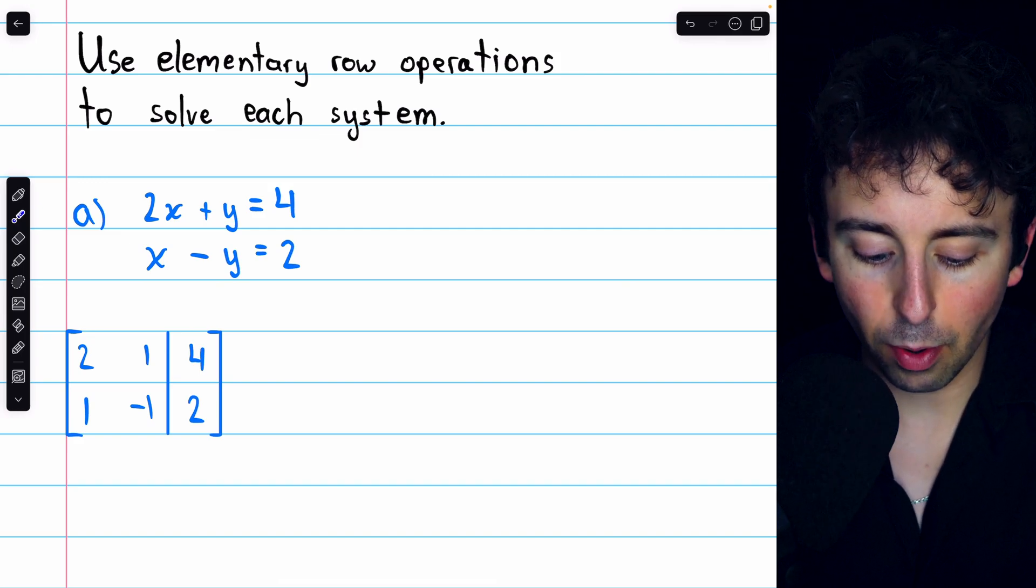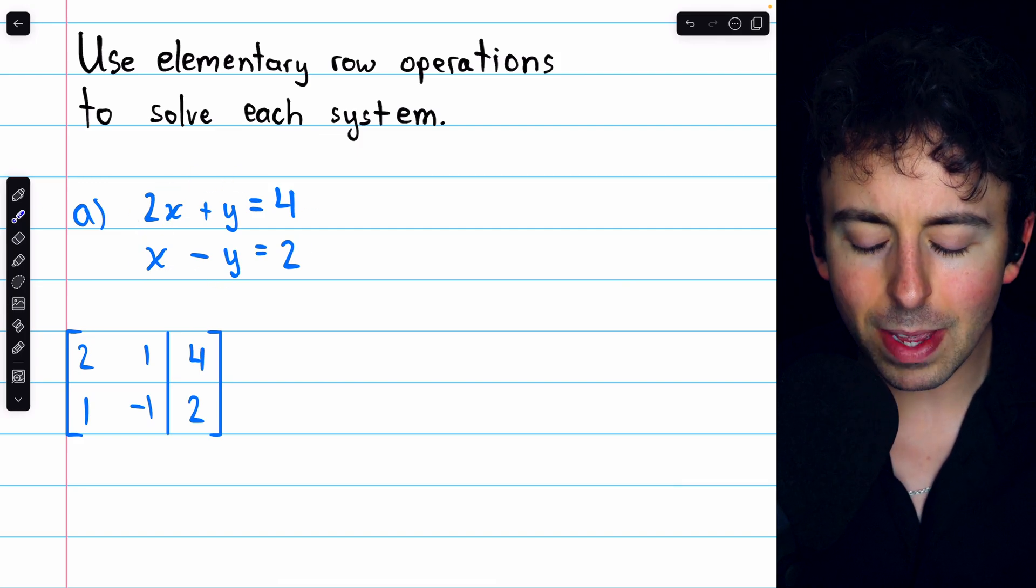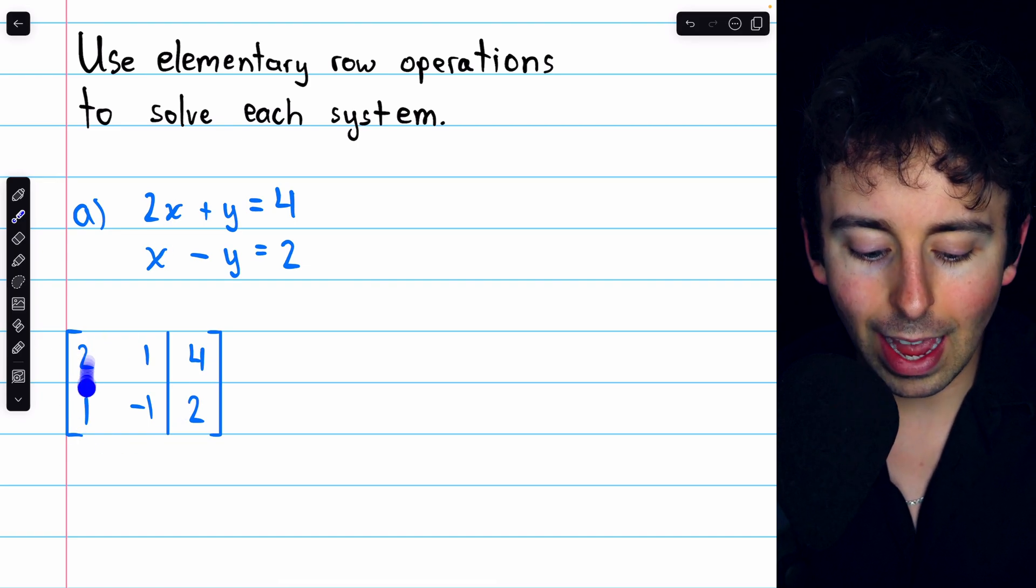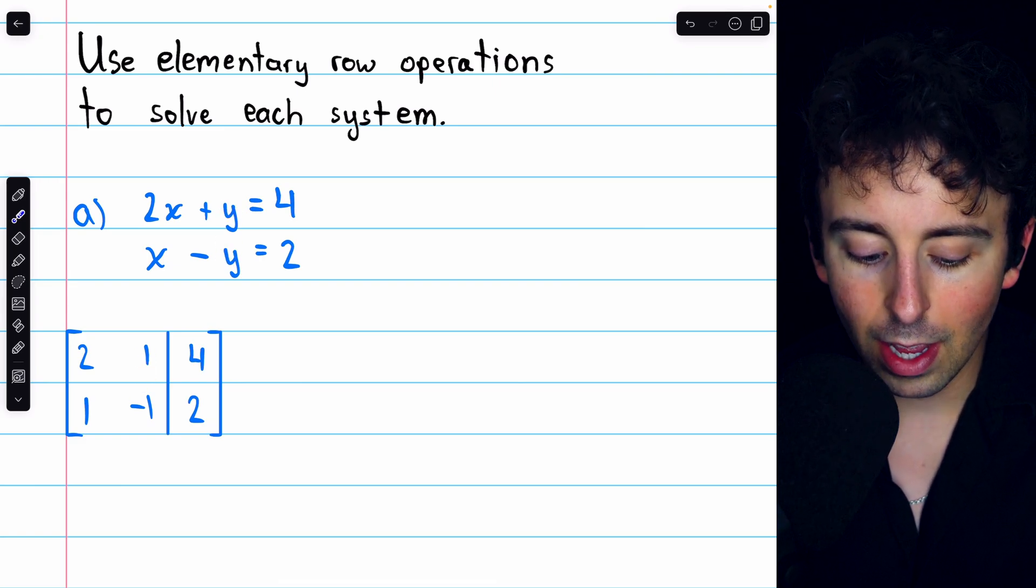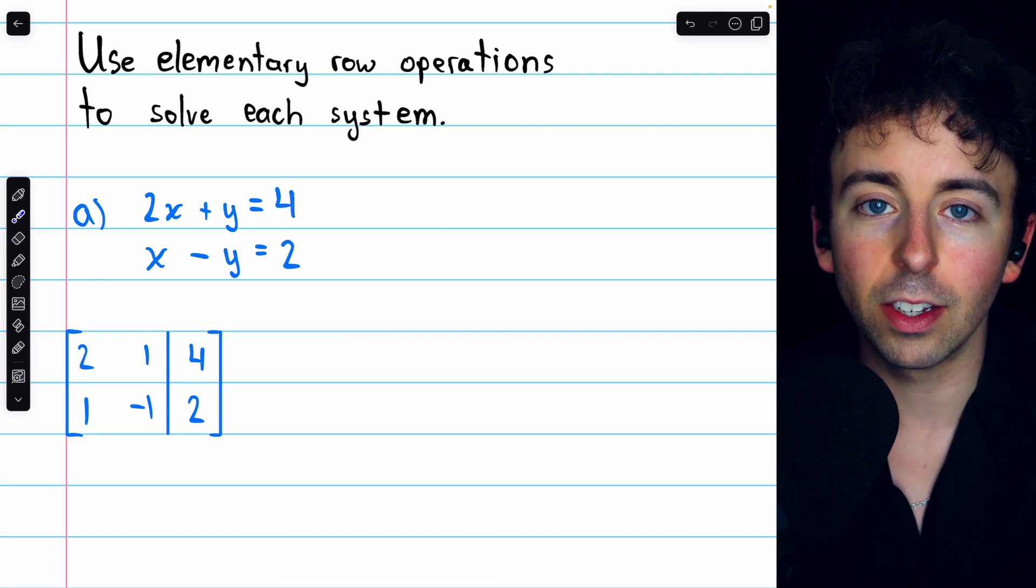Let's begin with this first problem. We've got these two equations in x and y, and we begin by representing the system with an augmented matrix. The coefficients of x are in column 1, and the coefficients of y are in column 2. Separated from the coefficients, we have the constants, 4 and 2.